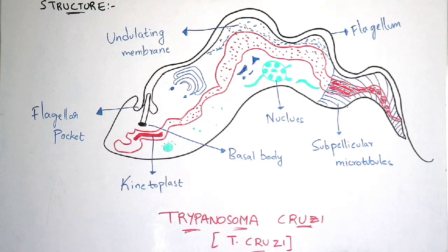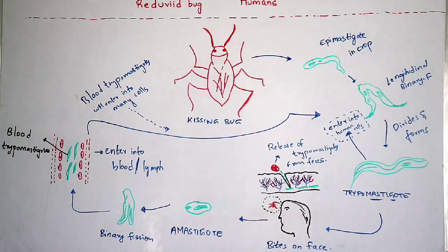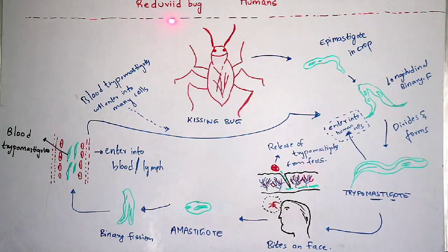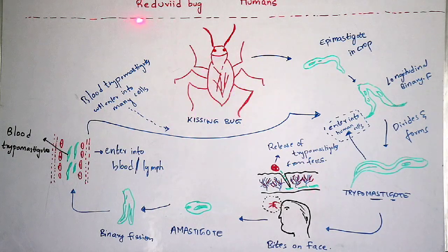Now let us discuss about the life cycle of Chagas disease, caused by the parasite Trypanosoma cruzi. This life cycle is completed within two hosts. The first host is the Reduviid bug, an insect commonly called the kissing bug. The secondary host is humans. The life cycle begins with the kissing bug.